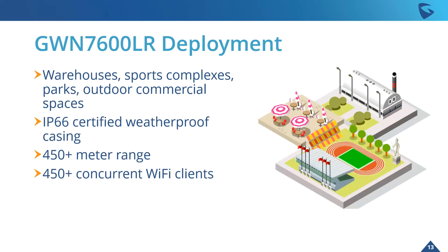For the GWN 76000LR deployment, we're looking at warehouses, sports complexes, parks, and outdoor commercial spaces. We've seen it used with cafes and outdoor restaurants. On the industry side, indoor and outdoor warehouses and shipping areas are a great fit. It has IP66 certified weatherproof casing, so you don't have to worry about environmental factors. It offers 300-meter range and 450 concurrent Wi-Fi clients — perfect for parks and sporting complexes where you want to give large crowds Wi-Fi access.